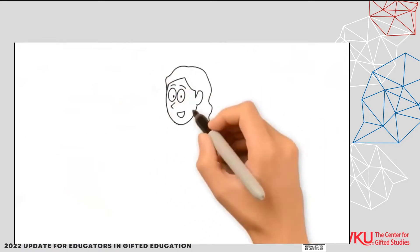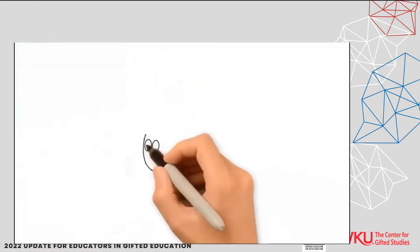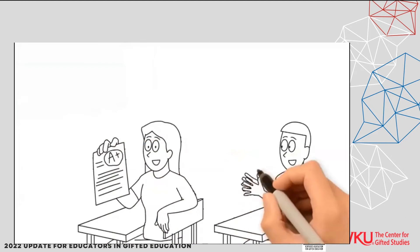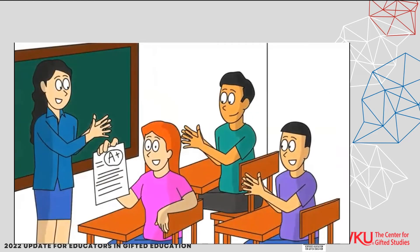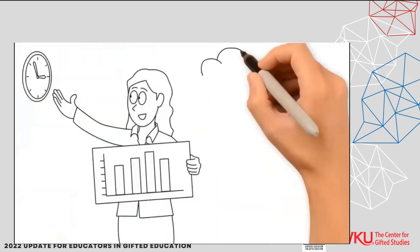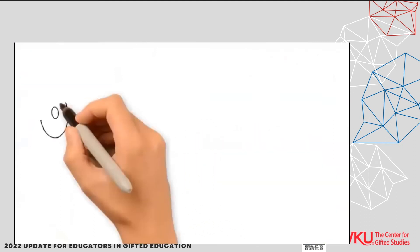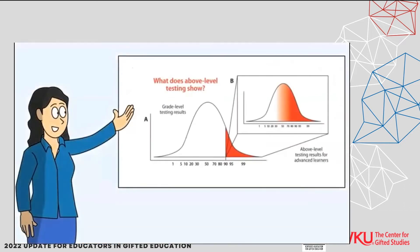Above-level tests can help reveal your child's actual performance level. Often grade-level tests are too easy for high-achieving and gifted children, since most regular tests are designed to measure whether students have learned grade-level material. But they don't spend much time measuring whether students have learned more than that. We call this phenomenon a ceiling effect. Above-level tests remove the ceiling to show the full extent of how much students know.